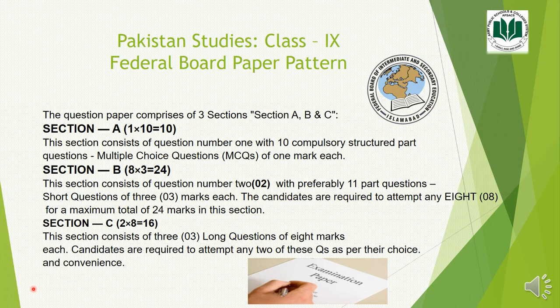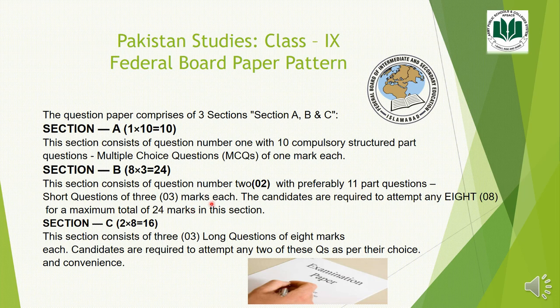The paper comprises of three sections. Section A comprises of MCQs of 10 marks. Then section B consists of short questions. A total of 11 questions will be given, out of which you will have to attempt any eight. Each part carries three marks. Total marks for this section are 24.